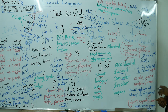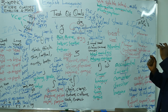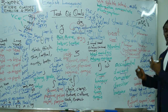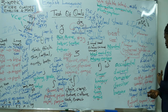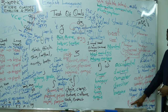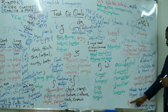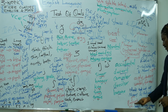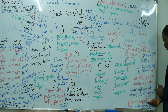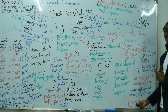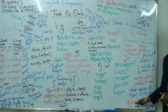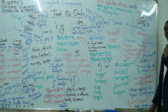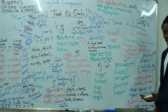Now, words that act as both nouns and verbs follow a different rule. For example, 'present.' When the word is acting as a noun, we stress the first syllable: PRE-sent — 'this is a present.' However, when we are using it as a verb, we say pre-SENT — 'we need to present.' So the first syllable is stressed for the noun, and the second syllable is stressed for the verb.